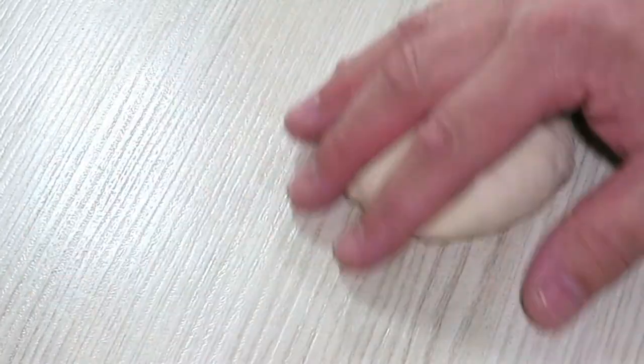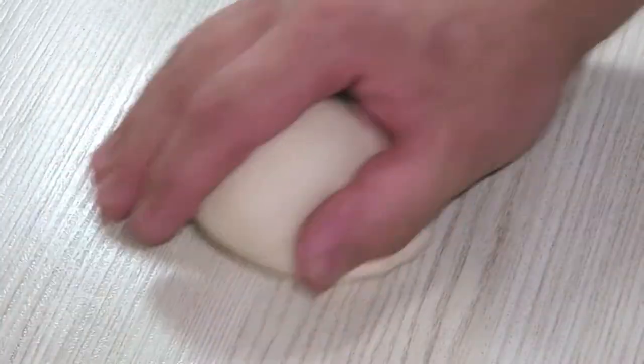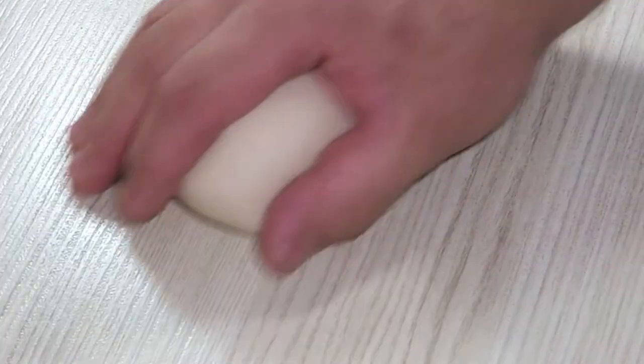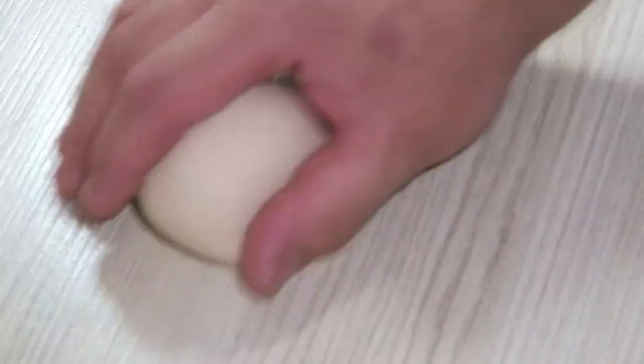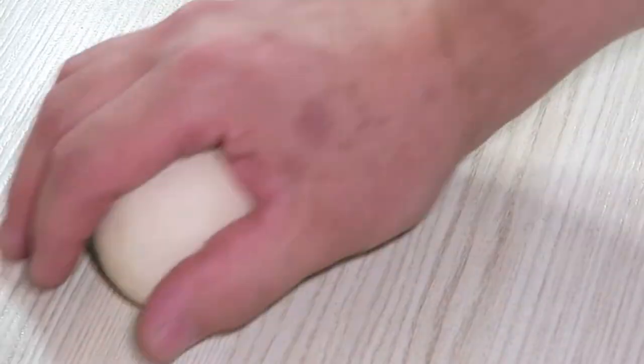Press the dough gently on the table with a cupped hand and move your hands in a circular motion. Do not make the circle too big because the dough must not roll. The base must always stay at the bottom.